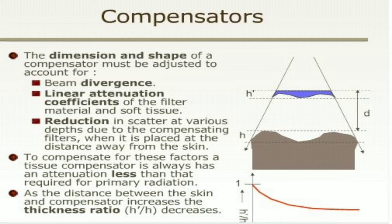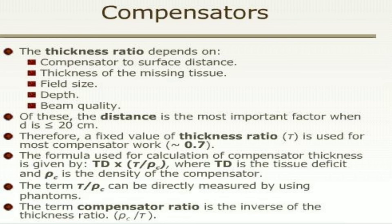To compensate for these factors, a tissue compensator always has an attenuation less than that required for primary radiation. As the distance between the skin and the compensator increases, the thickness decreases. A thickness ratio depends upon the compensator-to-surface distance, thickness of the missing tissue, field size, depth, and beam quality. The term compensator ratio is the inverse of the thickness ratio.